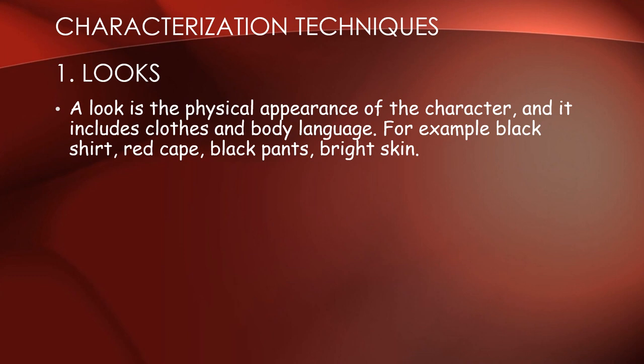We are going to start with the first element: how our characters look. We talk about the physicality and appearance of the character — how they look, whether they are tall or short. We look at the hair, the color of the hair, to give more description. We also look at the costumes of the character. This is called the 'look' of our character — how our characters look like.